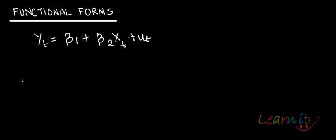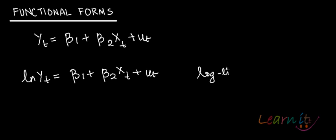Supposedly, if we have the model log of yt equals beta 1 plus beta 2 xt plus ut, how do we solve this? This is called log-linear model.